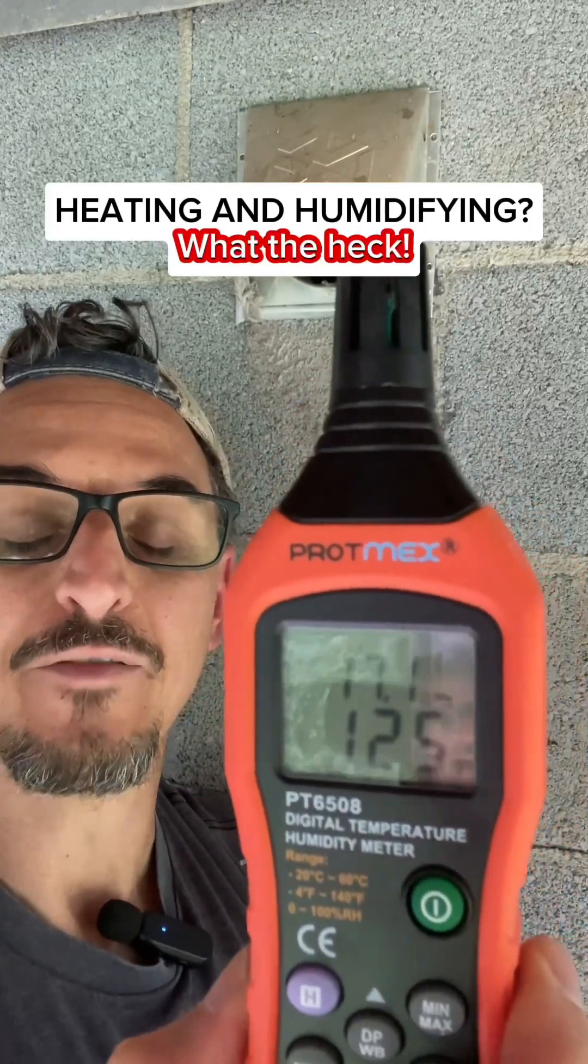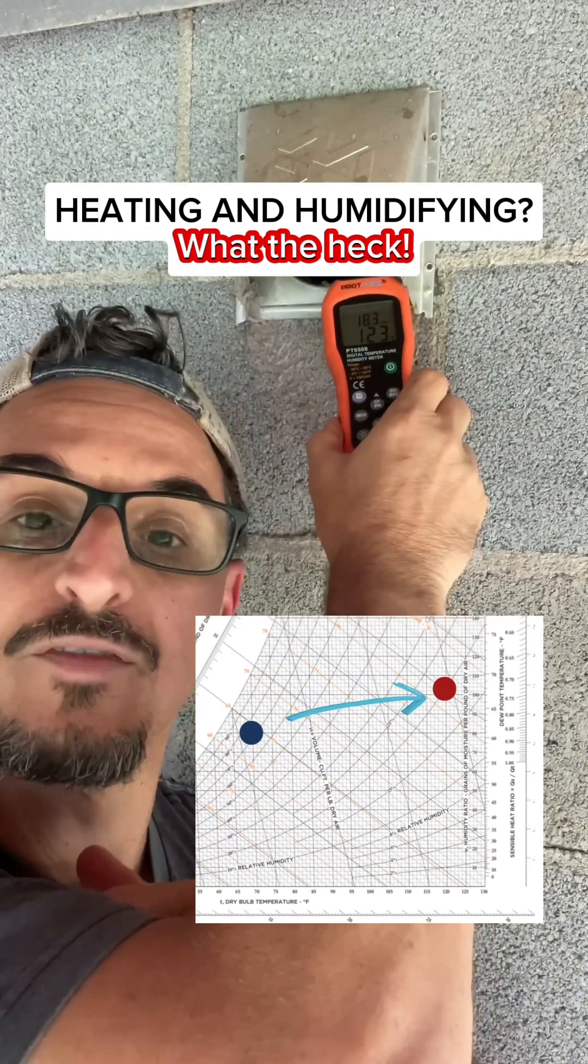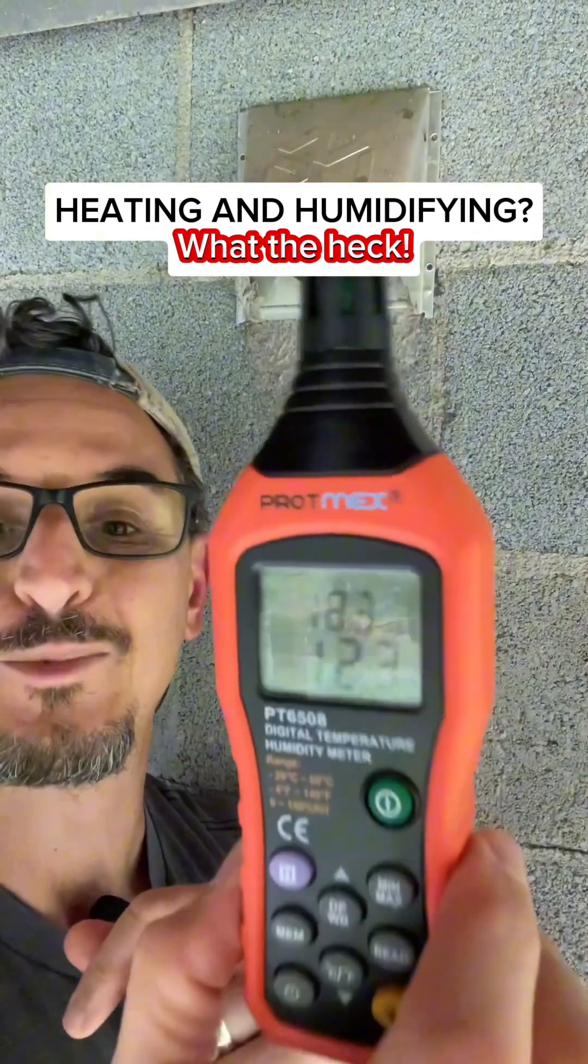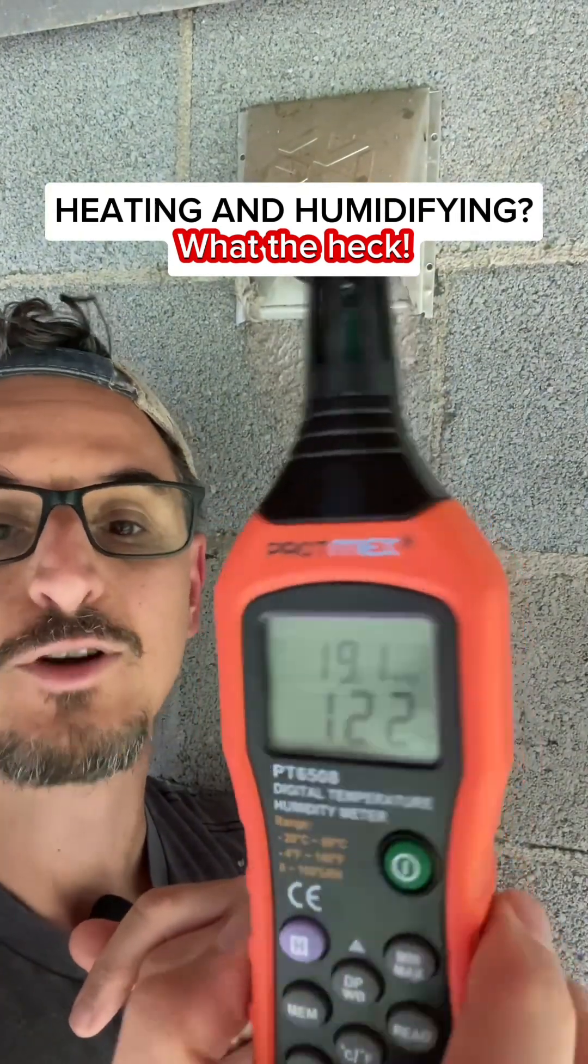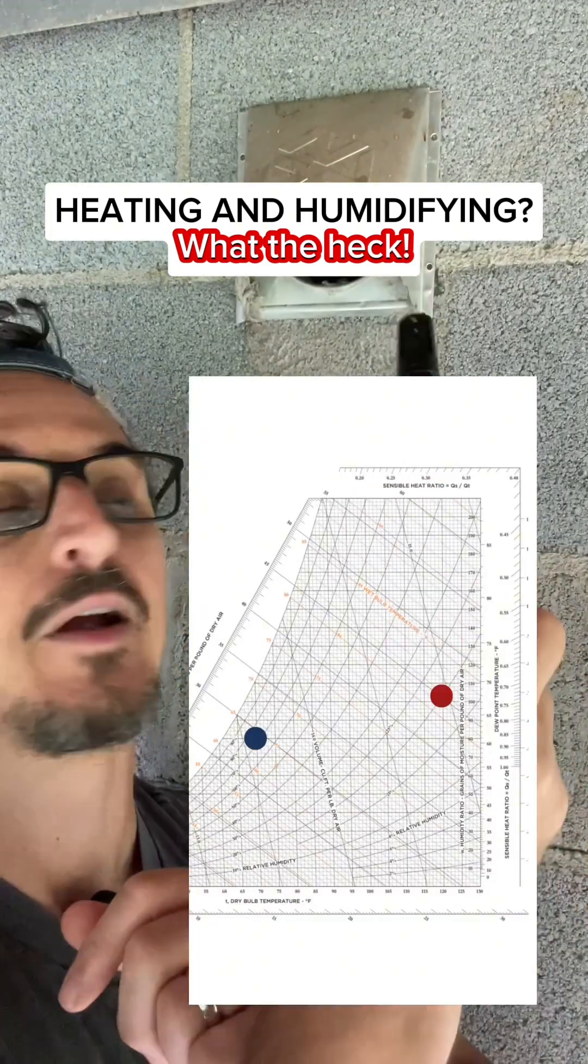Your home dryer is a great example of heating and humidification. So you're heating and humidifying the air. This is the temperature at the exhaust of the dryer vent. It's about 120 degrees and 20% RH.